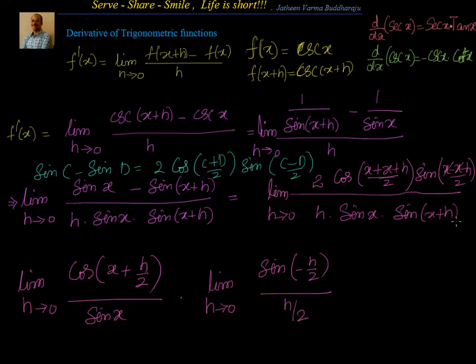This 2 I am trying to bring it down. 2 by h I can write it as 1 by h by 2. So that is what we are trying to do now, so that we can make this as 1. So this is equal to minus 1 because sin of minus h by 2 is minus sin h by 2. So our next step will be equal to minus of.